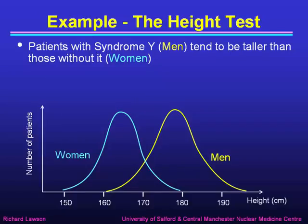Here's an example of a test that falls into that category — I've called it the height test. We observe that patients with syndrome Y, whom we're calling men, tend to be taller than those without syndrome Y, who we're calling women. If we look at a histogram of the number of patients against height in centimetres, we see a distribution like the blue one for women and a different distribution like the yellow one for men. The men tend to have taller heights than the women, but there is quite a bit of overlap in the middle.